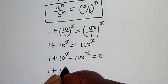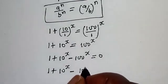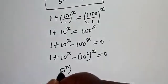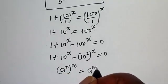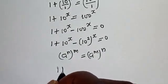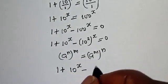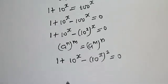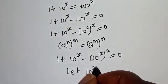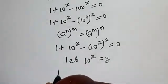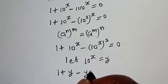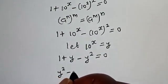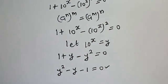So we have 1 plus 10 raised to power s minus 100 raised to power s equals 0. Take note of the rule that a raised to power n, to the power of m, equals a raised to power m, to the power of n. We can write 100 raised to power s as 10 raised to power s, squared. So we have 1 plus 10 raised to power s minus (10 raised to power s) squared equals 0. Let 10 raised to power s equal y, so we have 1 plus y minus y squared equals 0.